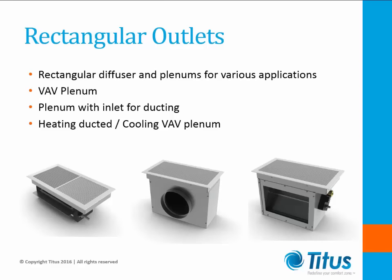There are also a variety of rectangular UFAD diffusers available. Some include plenums for ducted connections beneath the floor, others include manually adjusted dampers for balancing or actuated dampers to provide VAV control. Some are designed to allow the diffuser to receive air from multiple sources — for instance, a plenum with an actuated damper could be ducted to an underfloor terminal unit for heating or receive cool air directly from the floor plenum. Some of these devices have lay-in grills that can be turned in various directions to create different air patterns on the floor or to direct air vertically for perimeter applications.